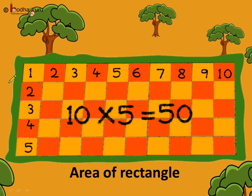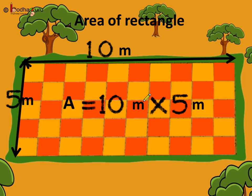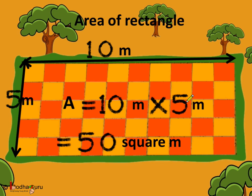Now, if we see the length, it has more number of tiles — 10 tiles — which means the length is 10 meters. And coming to the width, the width has 5 tiles, so the width is 5 meters. Now you know the length is 10 meters and the width is 5 meters. And what was the area we calculated? The area was 10 meters multiplied by 5 meters, which is equal to 50 square meters.